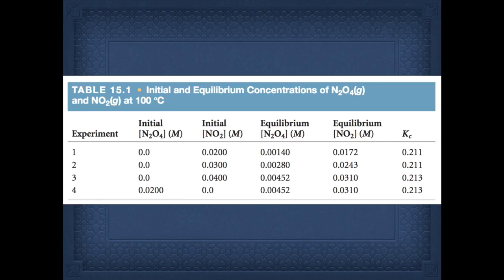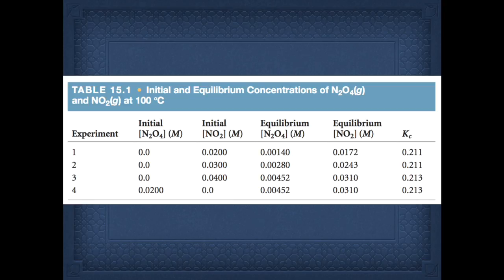This table shows different experiments starting with different concentrations of N₂O₄ (reactant) and NO₂ (product). All experiments begin with very different concentrations, yet when equilibrium is reached and the equilibrium constant is calculated, they are all the same. This demonstrates that no matter how much reactant or product you start with, once the reaction reaches equilibrium at the same temperature, the equilibrium constant stays the same. If you change temperature, the equilibrium constant will change.